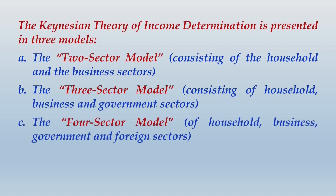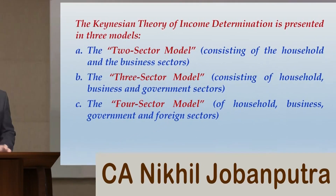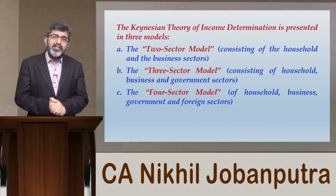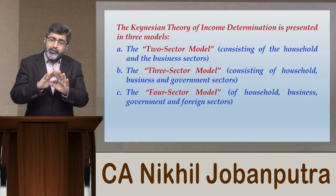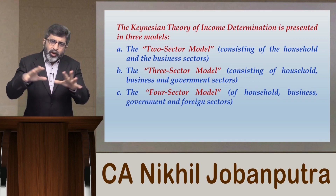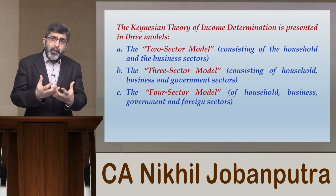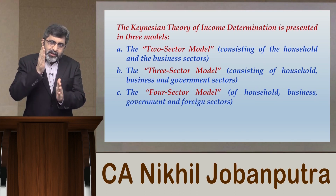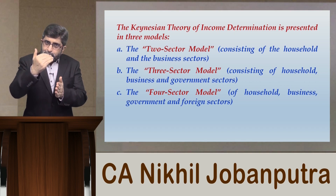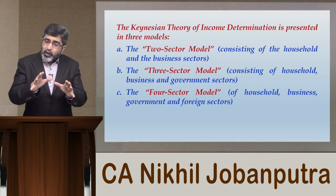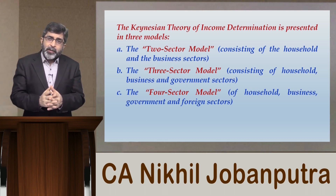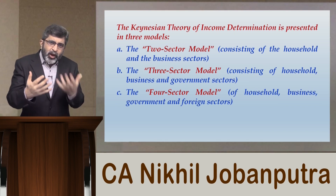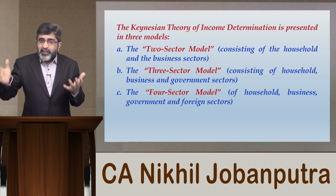The second is the three-sector model consisting of household, business, and government sectors. The third is the four-sector model consisting of household, business, government, and foreign sectors. What Keynes actually did was make a segmentation into three different models — initially focusing only on the two-sector model, then gradually bringing government into the picture making it a three-sector model, and then bringing foreign operations in to make it a four-sector model.